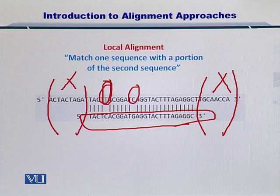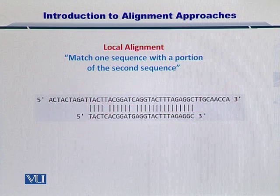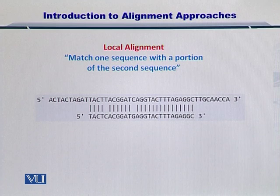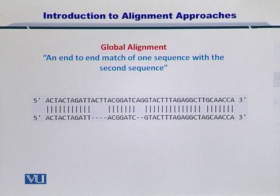This is equivalent to matching one sequence with a portion of the second sequence, and this is generally called local alignment. Local alignment is a very useful concept and allows you to search for specific shorter sequences in longer sequences in DNA or proteins.